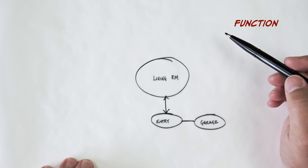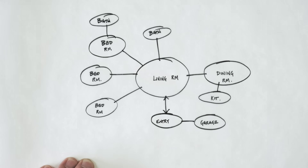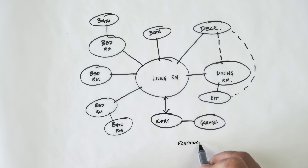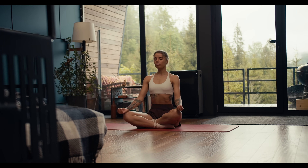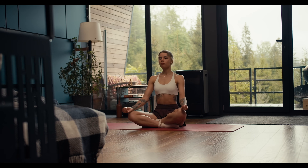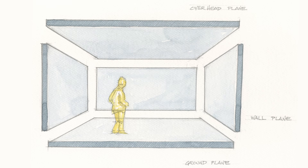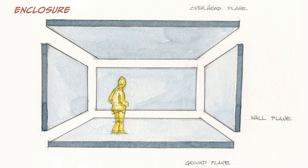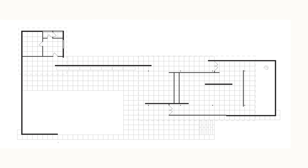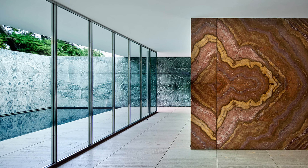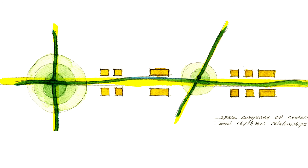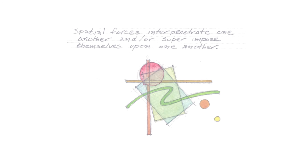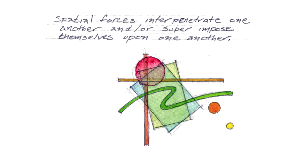Function can also shape a building. Modern architecture's principle of form follows function is often used to shape space — how people inhabit a space is a primary shaper of it. We call this functional design, but on a more elemental level it is about life and how people actually use a space. How space is enclosed also helps shape it; architects use ground planes, ceiling planes, and wall planes to shape space. In modernism, the wall planes were played with and removed to create flowing spaces.